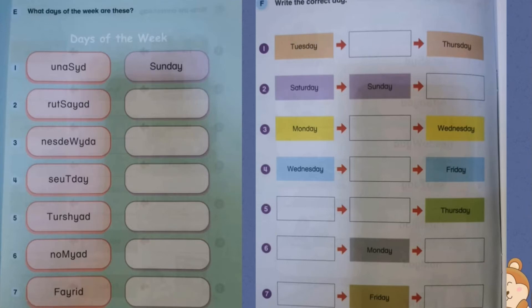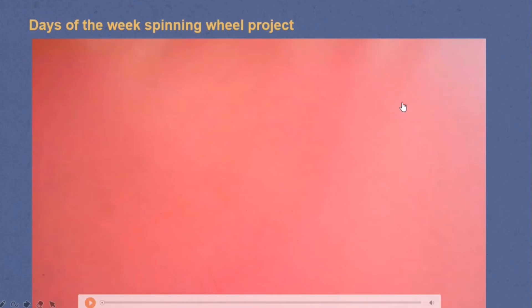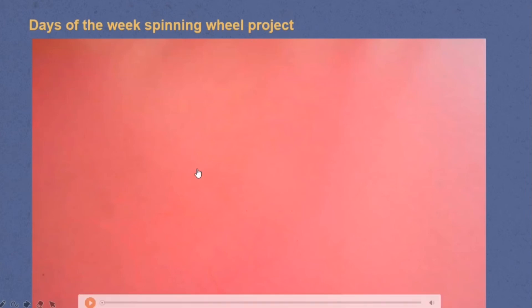And this one — write the correct day. For example, Tuesday — Tuesday is hari apa? Hari kedua, hari 3, hari Rabu. That is how you do it for this activity. You can refer to your textbook. And the last one is the days of the week spinning wheel project.